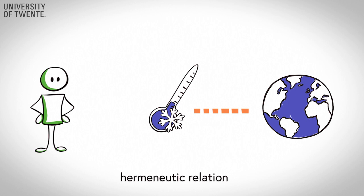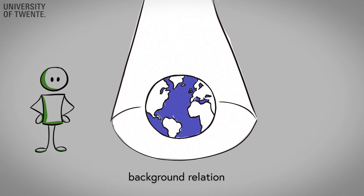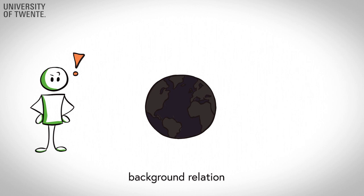And being read: a thermometer indicates a temperature by showing you a number that you have to interpret. And being interacted with: you interact with an ATM to get money. To being at the background: the lights and heating systems in a house, which you are typically not aware of when they function properly.